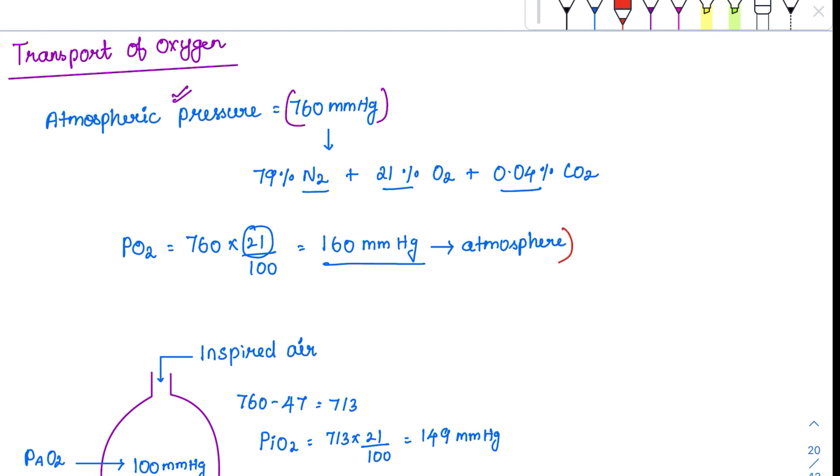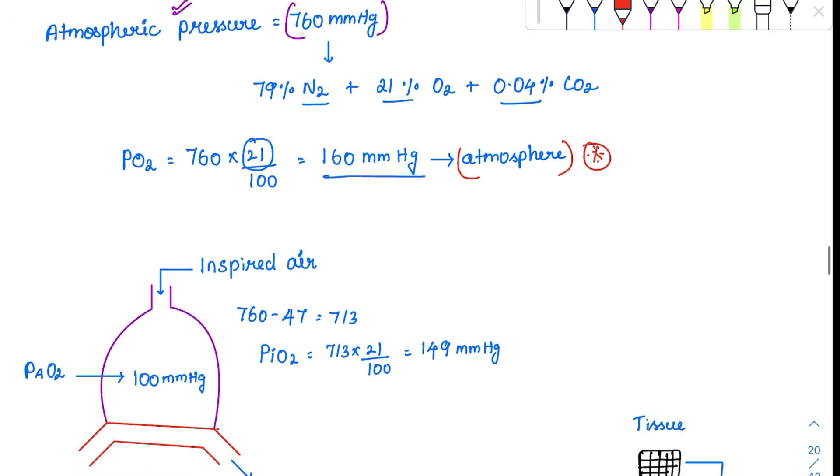This is the atmospheric levels of oxygen. But do you think the same oxygen reaches the blood supply? No, the answer is no. Because whenever we are inspiring, there is addition of water vapor. In the nasal cavity, in the pharynx, there is addition of water vapor. And this water vapor pressure is usually 47 mm Hg. So I should subtract this 47 mm Hg.